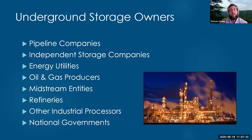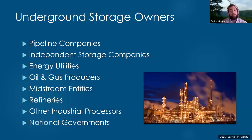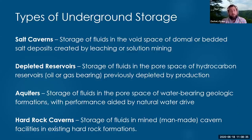Who takes advantage of underground storage? Number one is pipeline companies, which provide storage services along with transmission to service their customers. Independent storage companies, utility companies — because storage provides reliability for gas markets and gas-fired power plants — E&P companies, midstream companies doing cracker plants or fractionation, refineries that need to store feedstock or end products, other industrial processors, and national governments for strategic purposes — all are stakeholders.